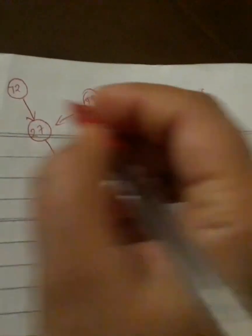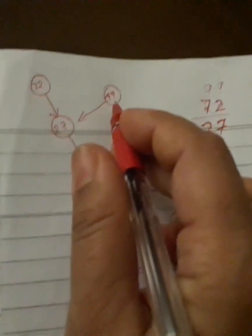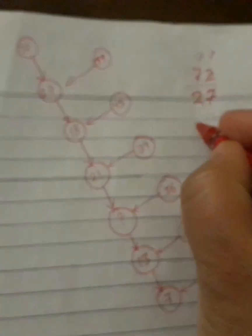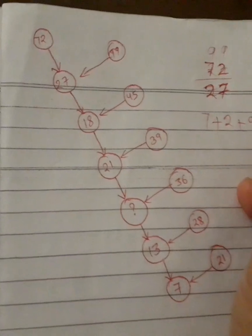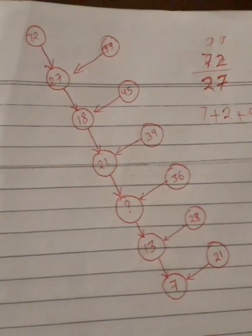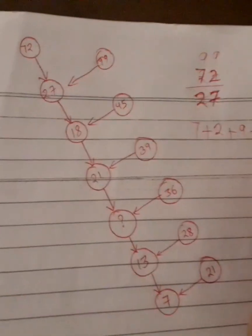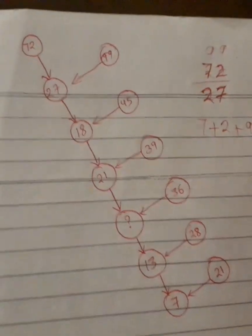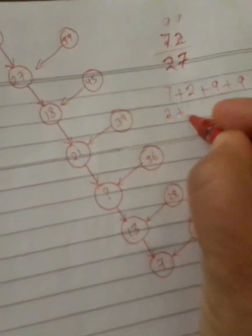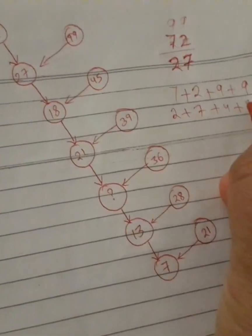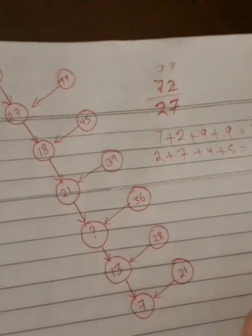You have to just add this number. Not add this number, you have to add the digits. If you add the digits 7 plus 2 plus 9 plus 9, it will come 27. Similarly, if you add these digits, 1 plus 2 plus 7 plus 4 plus 5, you have to add the digits, not the numbers.